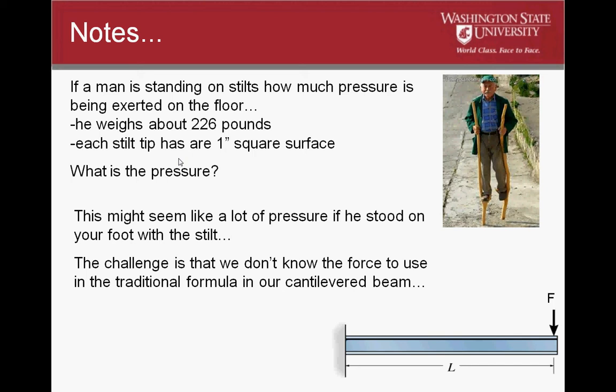Imagine if you were to be stepped on with stilts. That would hurt quite a bit. The calculation we can use to figure out the pressure they would be exerting is force over area. Our force is 226 pounds. If each stilt tip is one square inch and we have two stilt tips, we have 226 pounds divided by two square inches, which means the pressure being exerted by the man on the stilts is 113 pounds per square inch. If they stood on your foot, that would probably hurt.